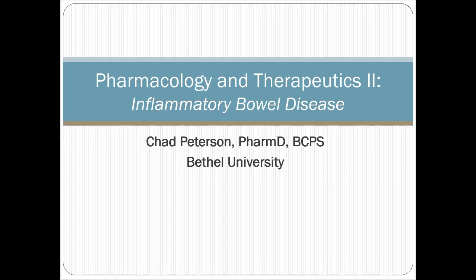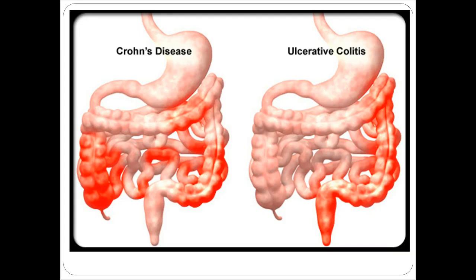This lecture focuses on a couple of different types of inflammatory bowel disease, primarily Crohn's disease and ulcerative colitis. As a general overview, Crohn's disease can affect anywhere in the GI tract, while ulcerative colitis is mostly reserved for the large bowel, the colon, and the rectum.